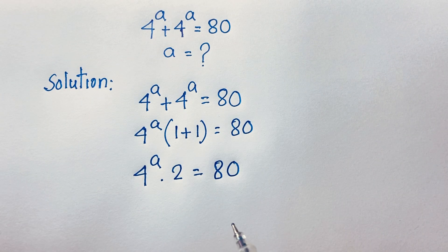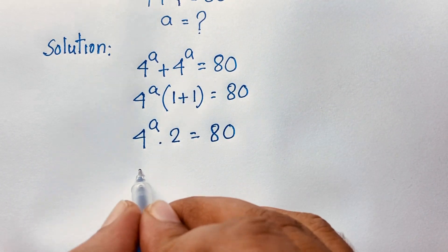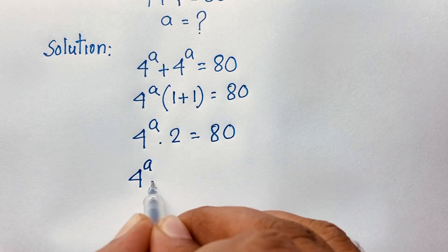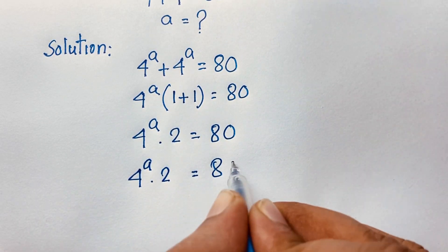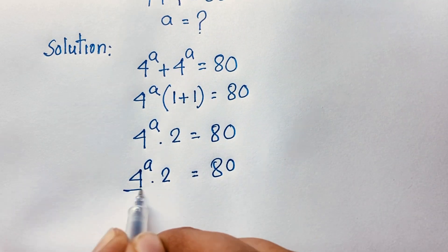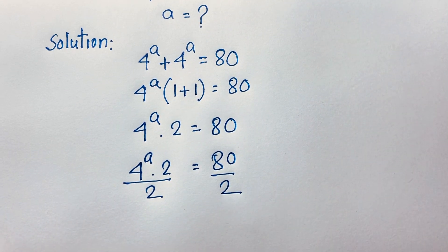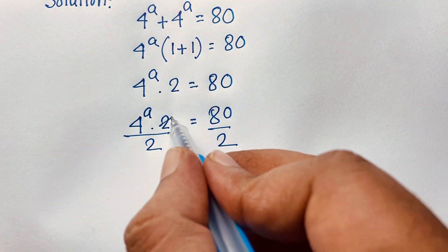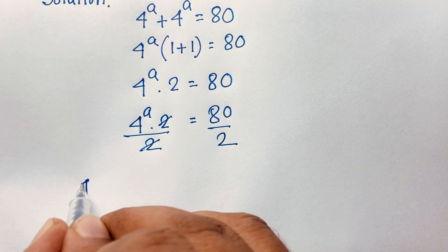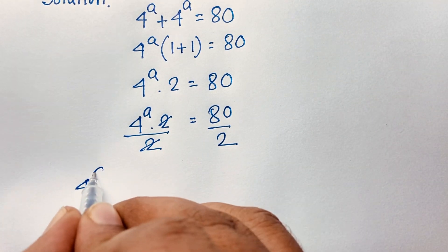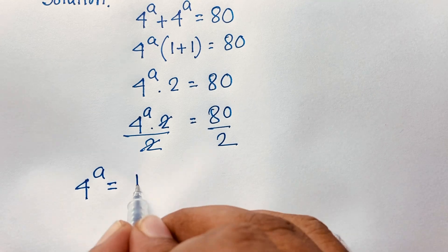Now I divide both sides by 2. So this expression will be 4 to the power A times 2 is equal to 80. Then I divide both sides by 2. The 2s cancel out, and we find that 4 to the power A is equal to 80 divided by 2, which is 40.